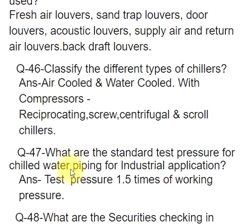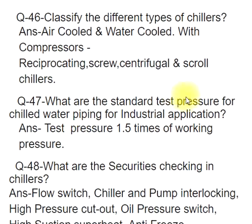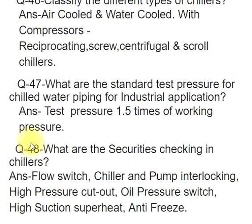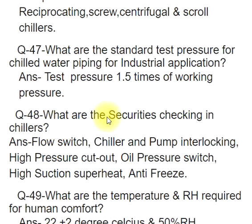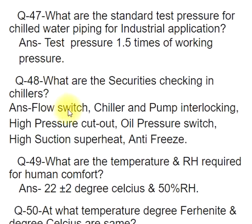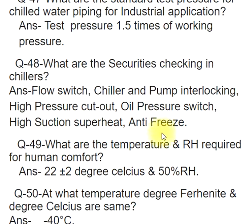Q47: What are the standard test pressures for chilled water piping for industrial application? ANS: Test pressure is 1.5 times the working pressure. Q48: What are the securities checked in chillers? ANS: Flow switch, chiller and pump interlocking, high pressure cutout, oil pressure switch, high suction superheat, antifreeze.